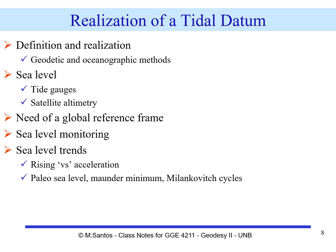The definition and realization of a tidal datum involve geodetic and oceanographic methods. To eventually define sea level, we need the tide gauges, and we will have to determine the sea surface topography, which could use satellite altimetry. There is a need for a global reference frame. The fact of life is that we may have local movements of the crust at the tide gauge site that will have to be monitored, so that the movement of the crust does not get embedded in the tidal records.